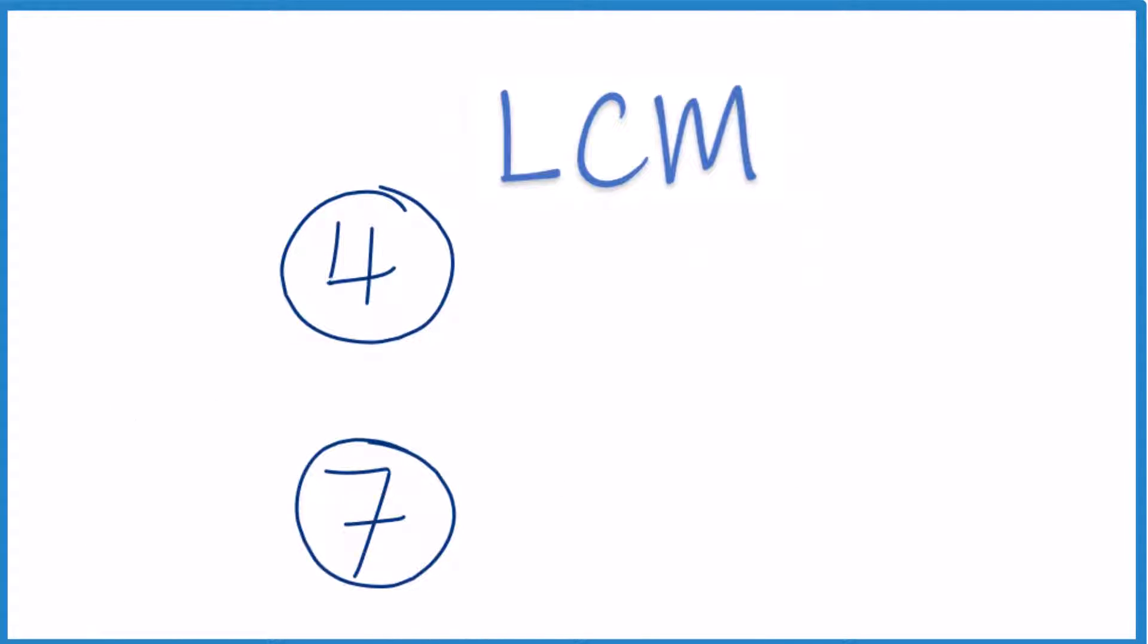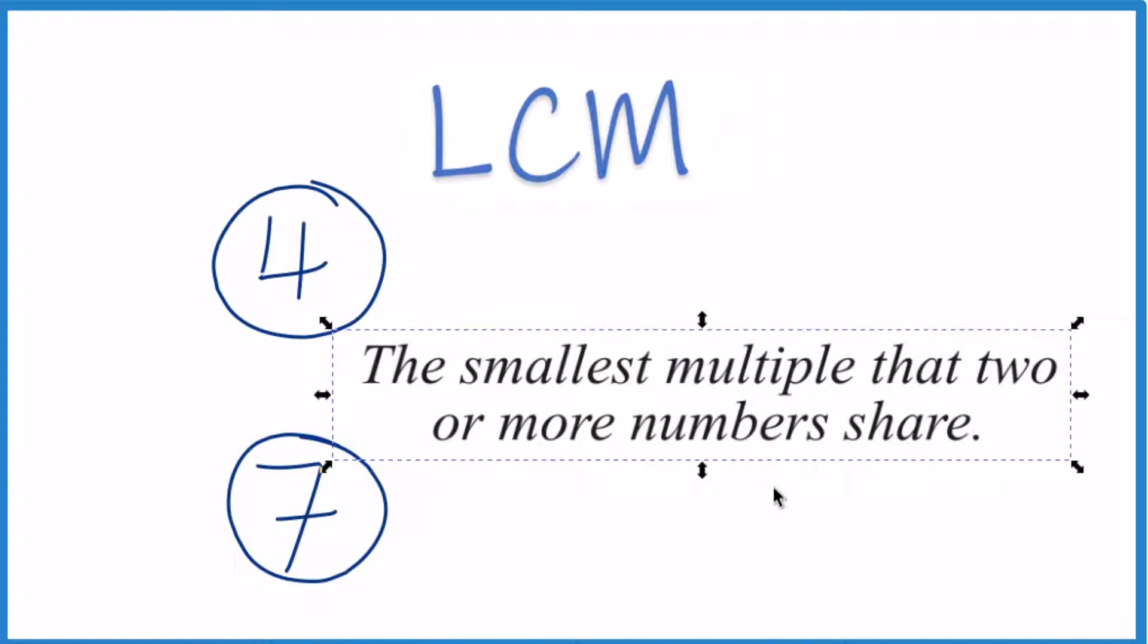So I like to think about the LCM. That's the smallest multiple of these two numbers, 4 and 7, that they share, so that they both go into evenly.